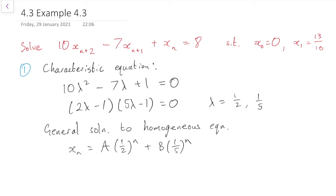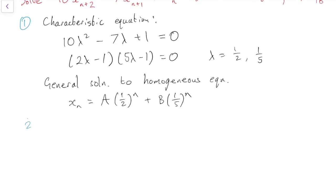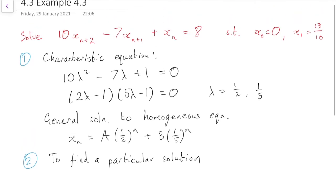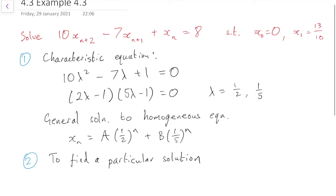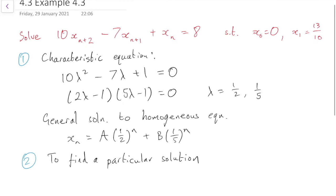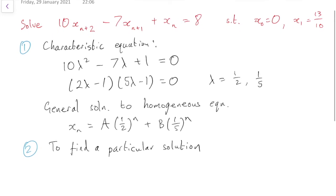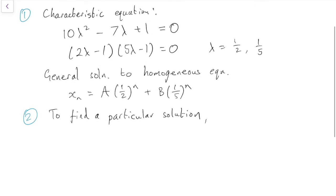Step 2 is to find a particular solution. So our equation had an 8 on the right-hand side, that is a constant on the right-hand side. So we're going to guess a particular solution being a constant, and see if that works. So we're going to guess xn = C, a constant.